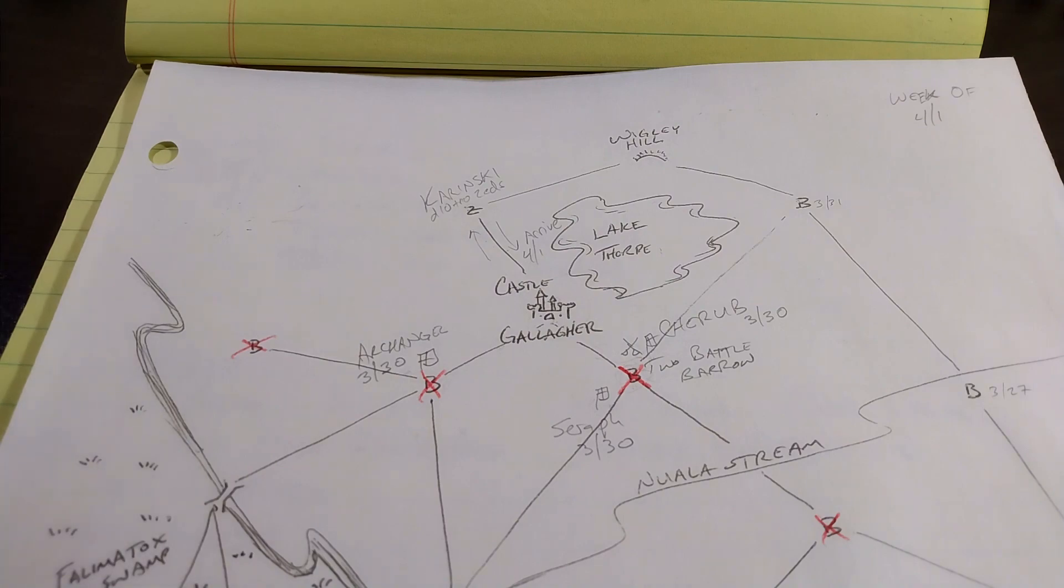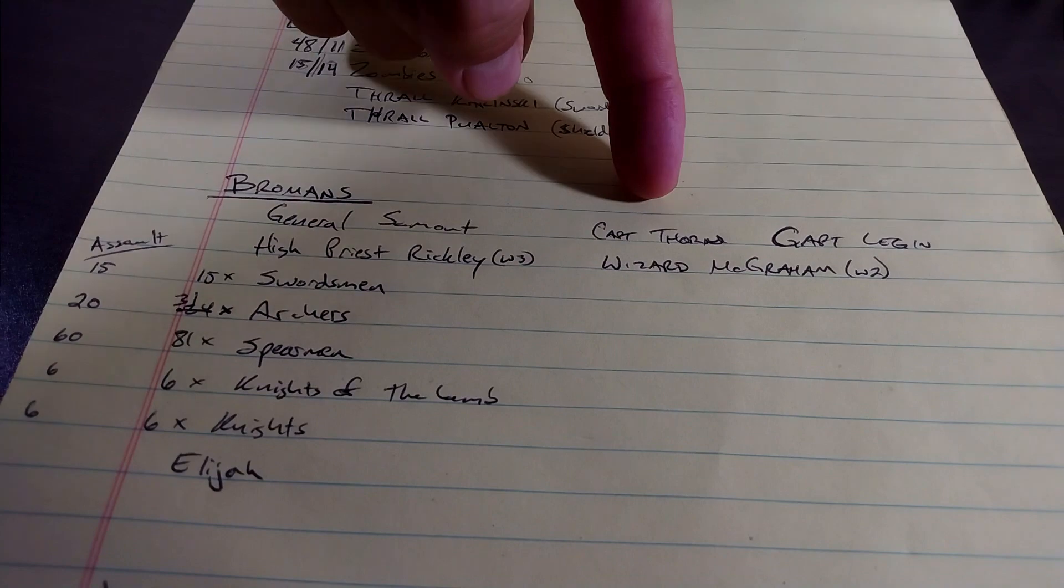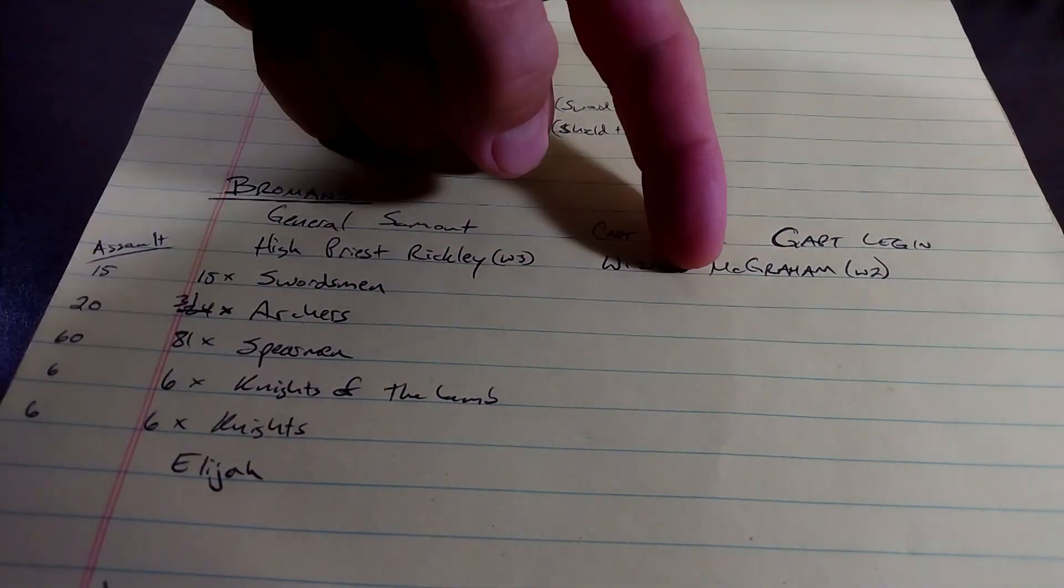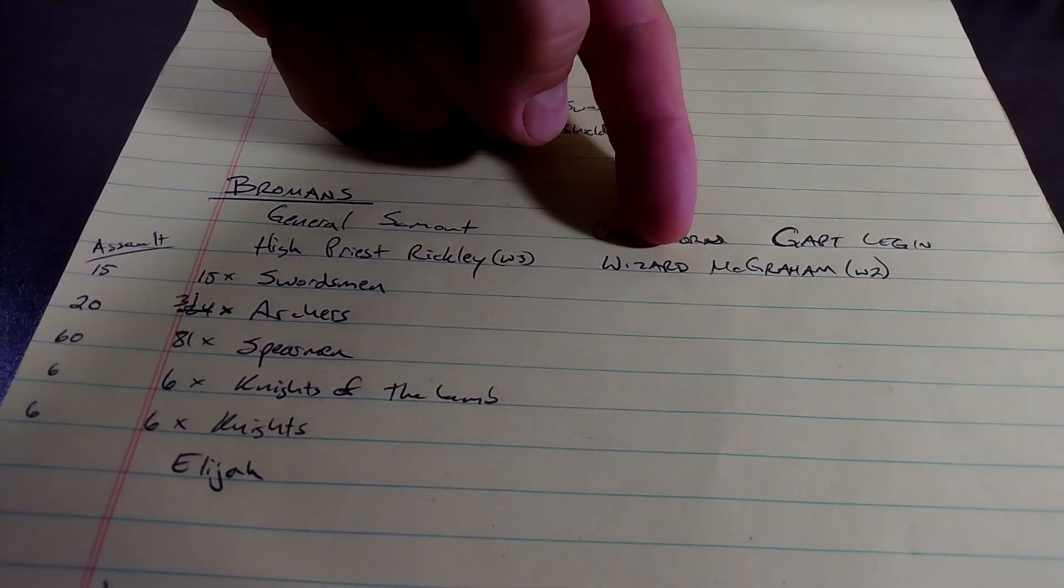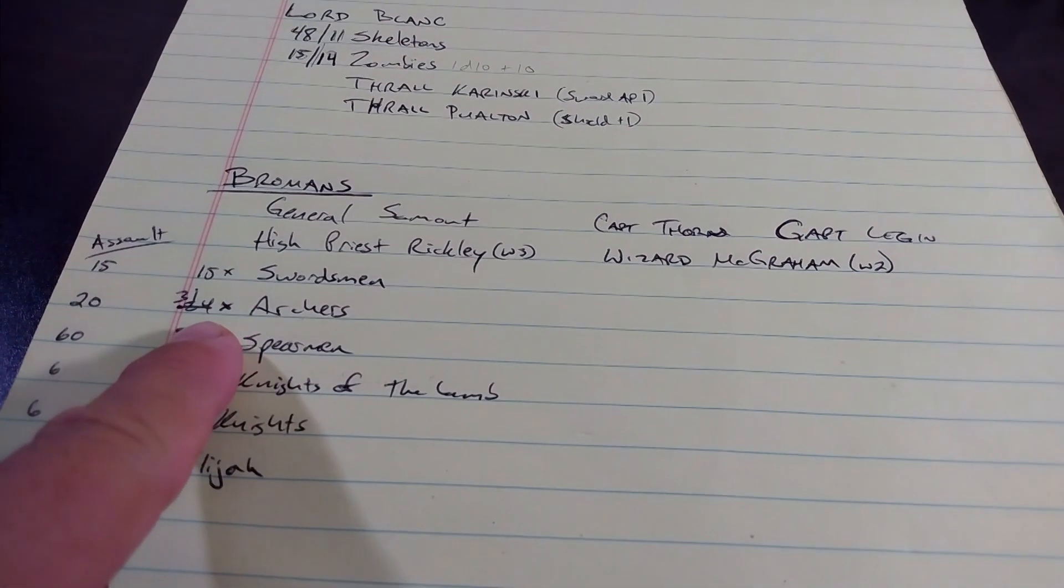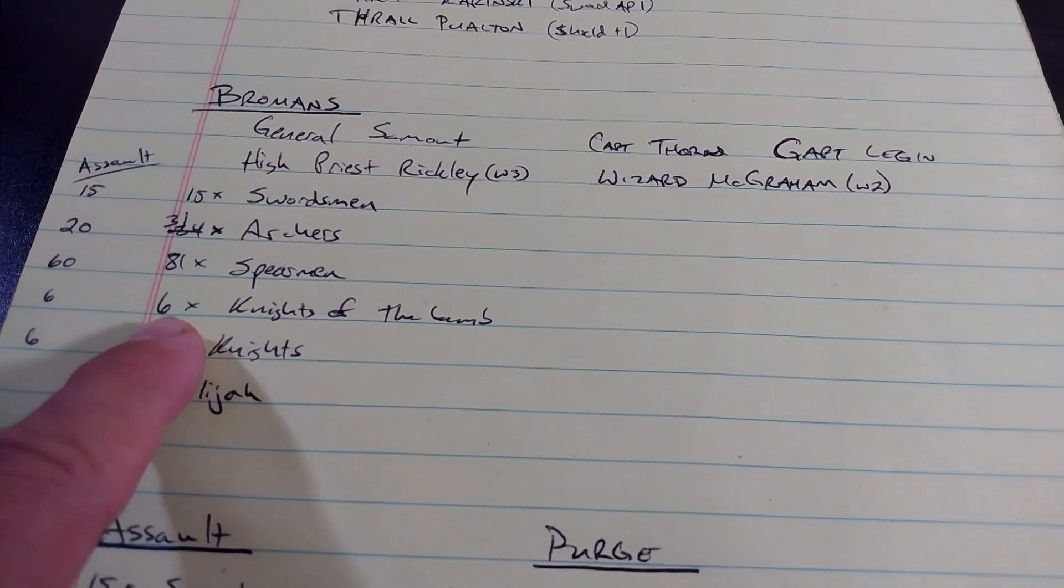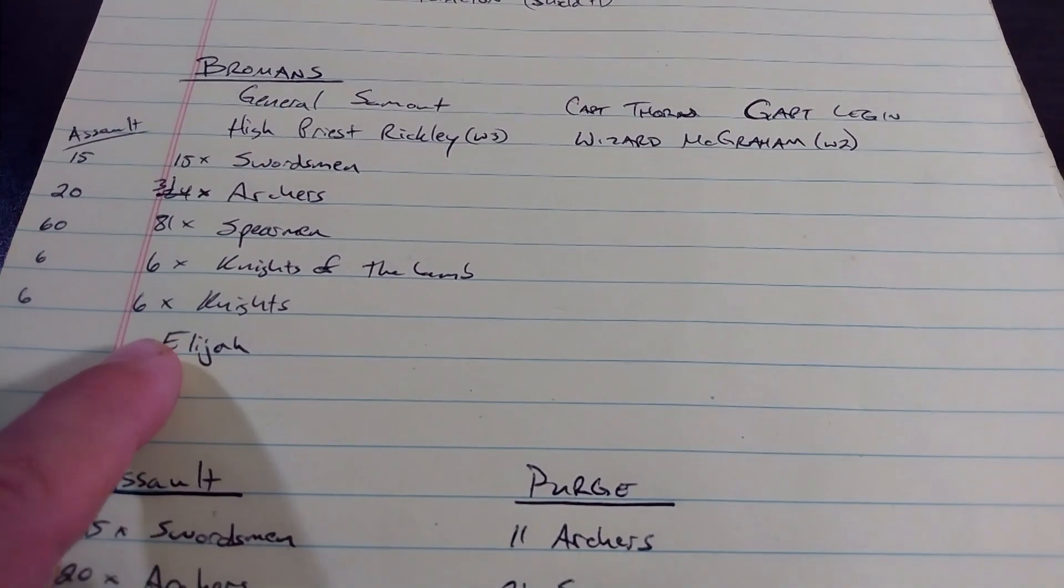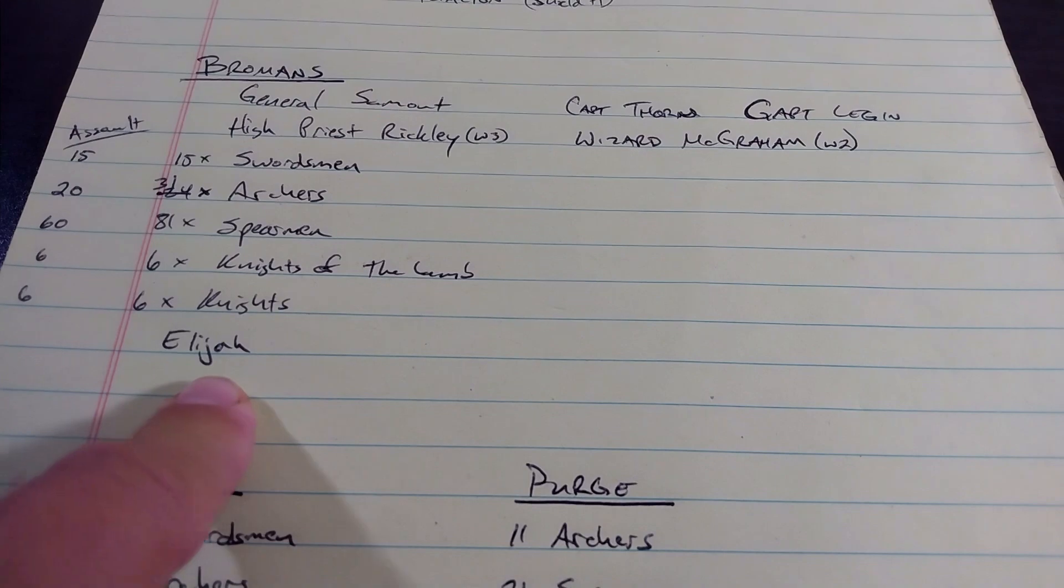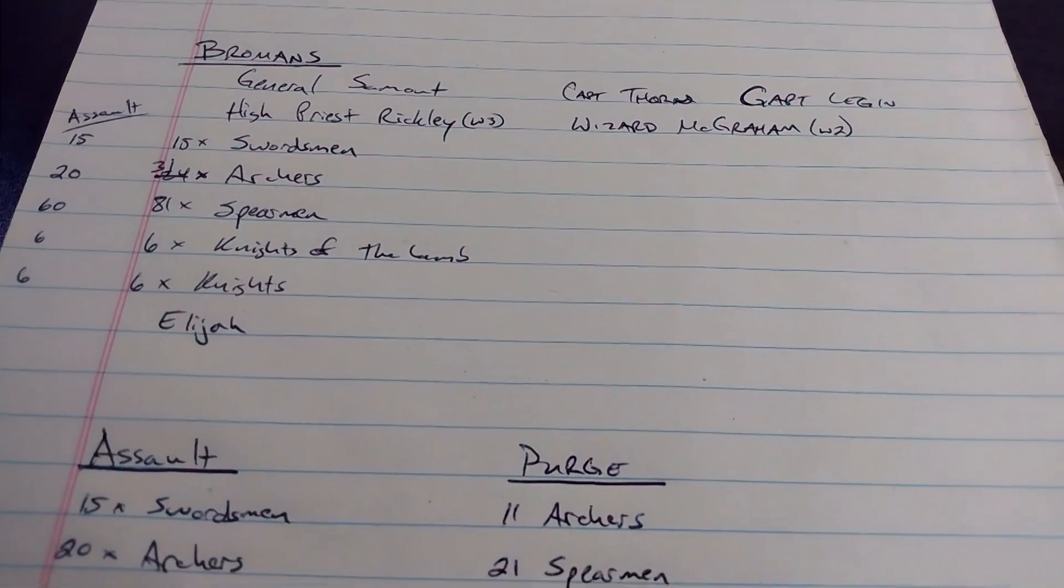So another 14. So he will start with 29 zombies. And that is important because the Bromans have General Samout, Captain Thorn, Captain Leggin, High Priest Rickley, Wizard Magram, the Battle Master, the Battle Wizard, like we talked about. They also have a total of 15 swordsmen. Look at these numbers. 31 archers, 81 spearmen, six knights of the Lamb, six questing knights, if you will. The canon Elijah. They also have the canon Moses, but Moses doesn't have a crew.